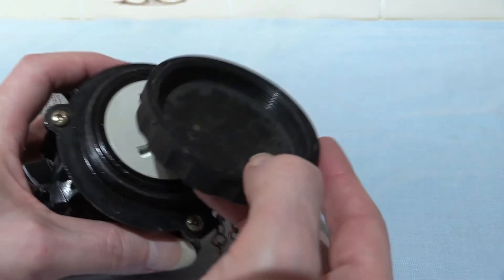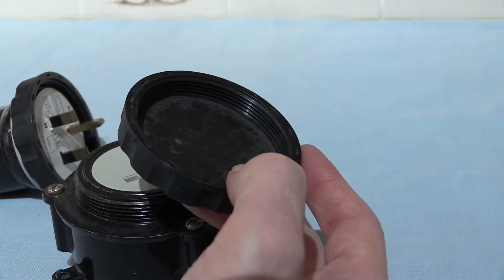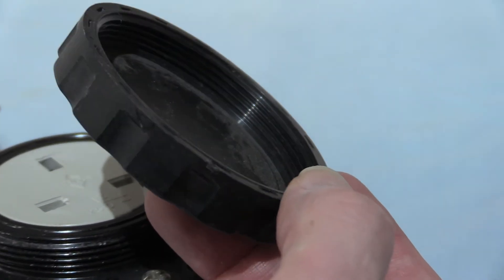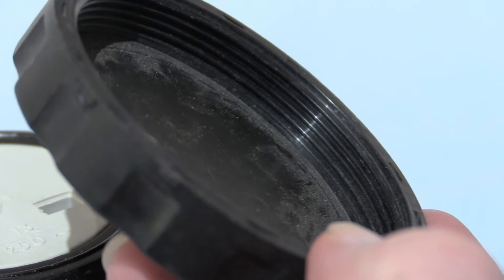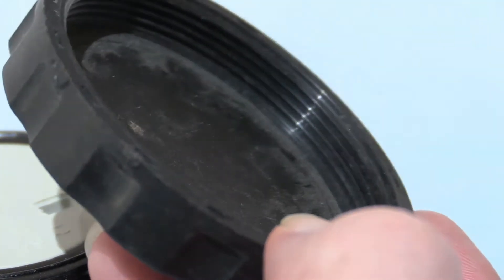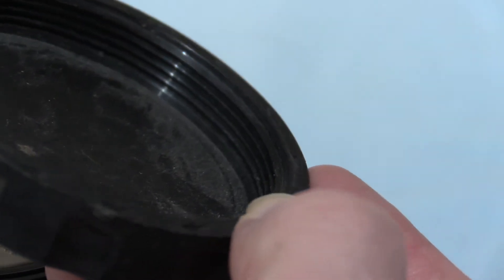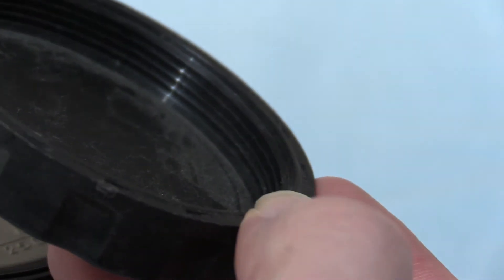There's a rubber seal inside there, you can see the thread in there. A little zoom on that for you, so you can see the rubber seal in there and the thread, going all the way round in there.